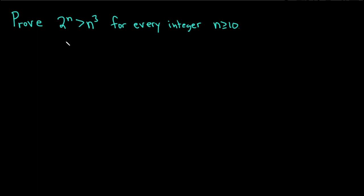In this problem we're going to prove that 2 to the n is greater than n cubed for every integer n greater than or equal to 10. And we're going to do it using the principle of mathematical induction. So, proof.